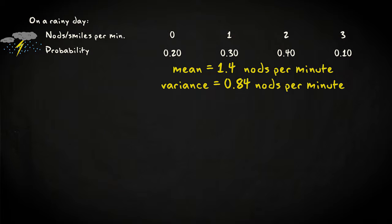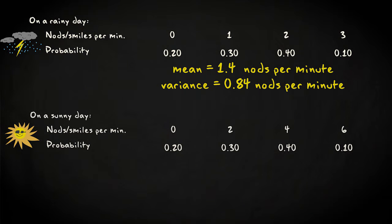Now, at the same time of day and location, under sunny weather, everyone seems to have become friendlier. Two times as friendly to be specific. Here's the nod and greet distribution under sunny conditions. There's the same category of grumpy people who never nod. But for the rest, you expect up to 6 smiles or nods per minute.